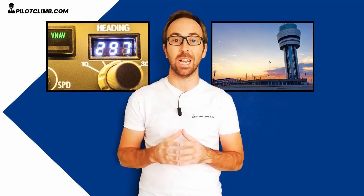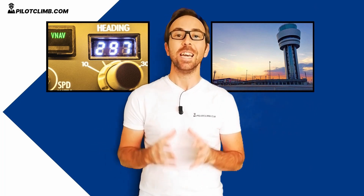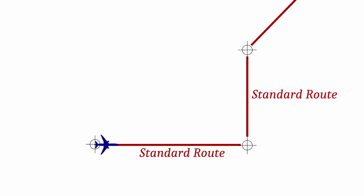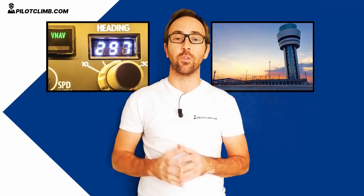Air traffic controllers utilize radar vectors for many reasons. The best reason for you as a pilot is when they give us radar vectors to shorten your route. Let's say your route has a 90-degree angle and the air traffic controller gives you radar vectors to make your route a lot shorter. This is one of the reasons why the air traffic controller sends radar vectors — to instruct pilots to fly a specific heading.